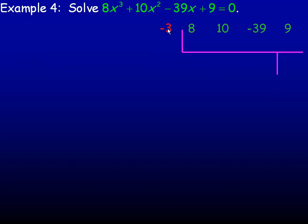Negative 3 is a factor of 9, so we will try that. Bring the 8 down and multiply by negative 3, which is negative 24.